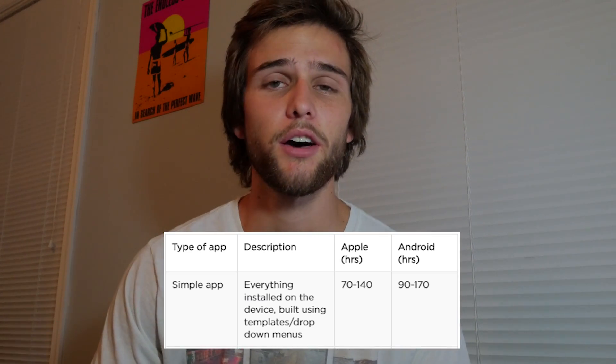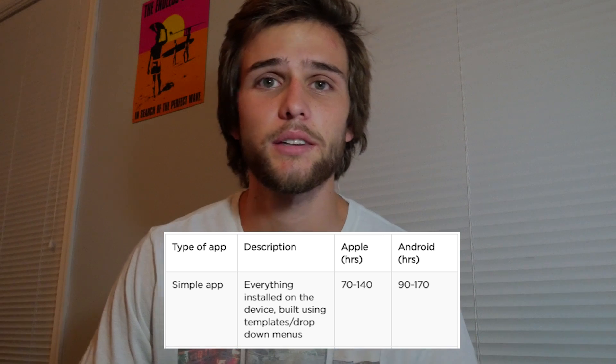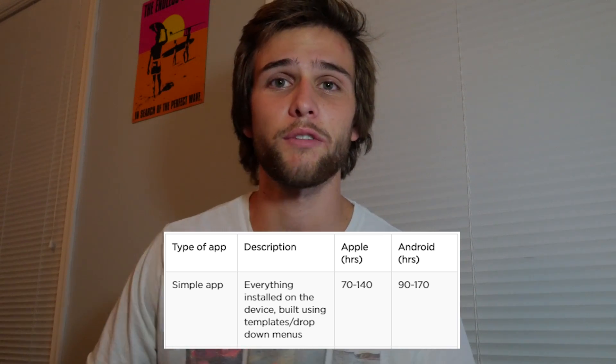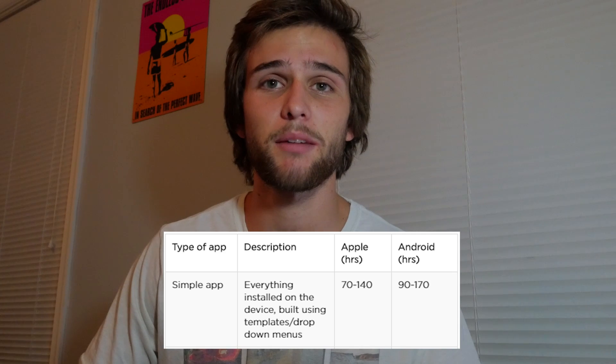The next question is how much time is spent on these projects? Simple apps are around 70 to 140 hours. A simple app is where everything is installed on the phone and it's not using some type of back-end database. Sometimes these even use templates or some type of drop-down menu. Those take around 70 to 140 hours.